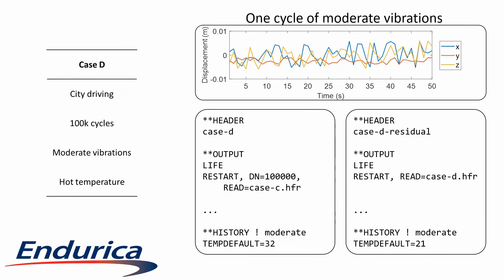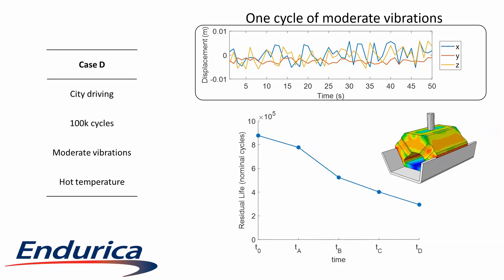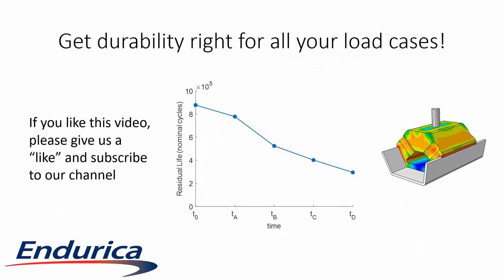Lastly, we add case D with a warmer temperature to our part's life and recompute the residual life. We can now see that our transmission mount successfully endures the four accumulated load cases. It still has approximately 30% of its original life left. Endurica DT lets you accumulate damage over many different load cases. Get durability right for all your load cases.